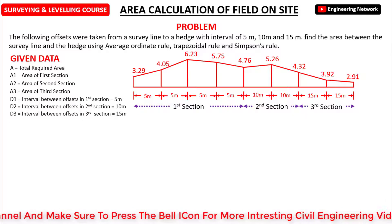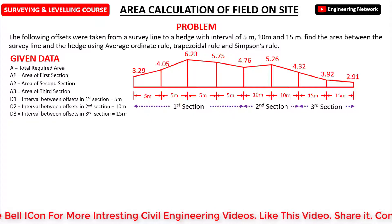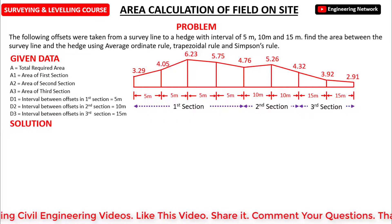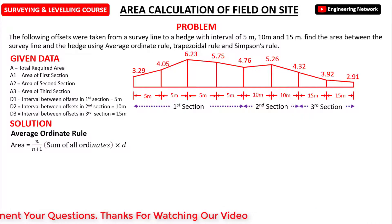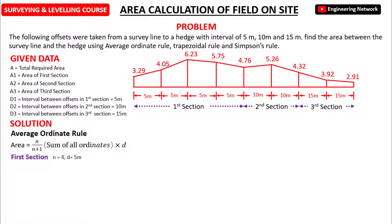Now let's solve this question. The first rule is the average ordinate rule, which states that area equals n divided by (n+1) into the sum of all ordinates multiplied by D. For the first section with interval 5m, the number of offsets n is 4 and D is 5m. So A1 equals 4 divided by (4+1) into (3.29 + 4.05 + 6.23 + 5.75 + 4.76) multiplied by 5. After calculation, the area for the first section is 96.32 square meters.